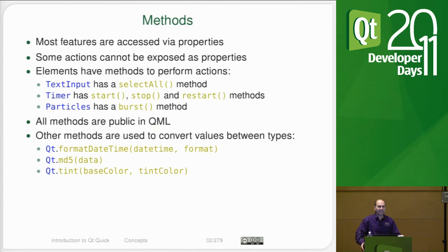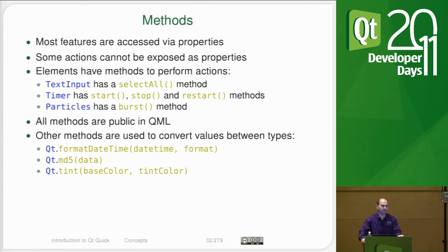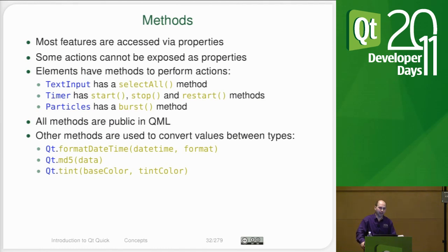Methods in QML are JavaScript functions. There are a number of QML elements that come out of the box with functions — such as the text input has a selectAll, the timer has start, stop, and restart, and particles has burst. Particles is actually like a firework type of item that you can configure to do burst patterns, very helpful for doing things like games. There is also the concept of the Qt Global Object — you can think of this like a namespace. You can use it to do things like format datetimes, do MD5 sums, and do color manipulations. When you're getting started with Qt Quick, I would look up the Qt Global Object and read all the functions that it has, because it has a lot of useful things that you might not know where to look for.